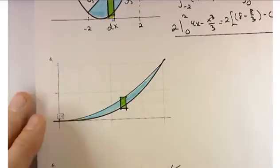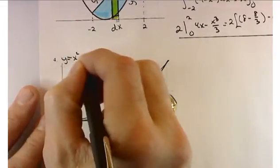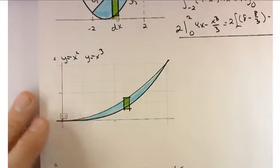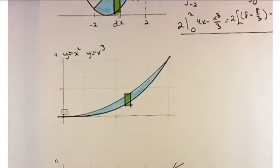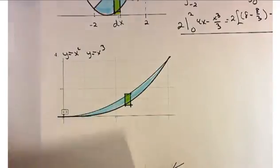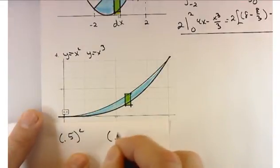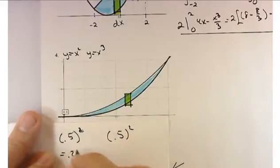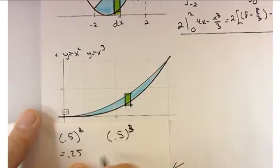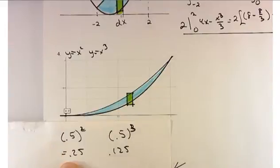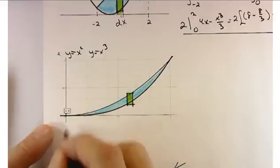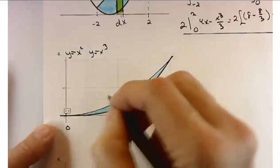There are some divided opinions. To see which function is bigger, pick a number in between — say 0.5. If I square 0.5, I get 0.25. If I cube 0.5, I get 0.125. Since 0.25 is bigger, in the interval 0 to 1, y equals x squared is actually the bigger function on top.